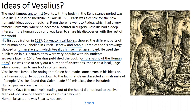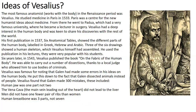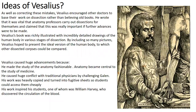Thanks to a local judge, Vesalius was able to carry out a range of dissections on criminals. It was also rumoured that he stole bodies from grave sites. Through all these dissections and publications, Vesalius found that Galen had made errors on the human body, putting this down to the fact that Galen had dissected animals instead of people. Vesalius found 300 anatomical mistakes, including: the human jawbone was one part, not two; the vena cava didn't lead to the liver; men did not have one fewer pair of ribs than women; and the breastbone was three parts, not seven.